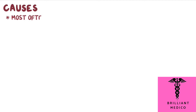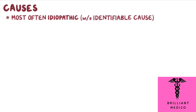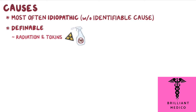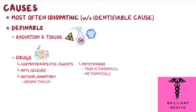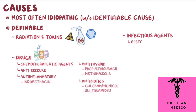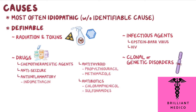There are many causes of aplastic anemia, but the disease is most often idiopathic, or without an identifiable cause. Definable causes include radiation and toxins like insecticides or industrial agents that contain benzene. Drugs that may cause aplastic anemia include chemotherapeutic agents, anti-seizure medications, anti-inflammatory medications like indomethacin, anti-thyroid medications like propylthiouracil and methimazole, and antibiotics like chloramphenicol and sulfonamides. Infectious agents like the Epstein-Barr virus or HIV, and clonal or genetic disorders can also cause aplastic anemia.